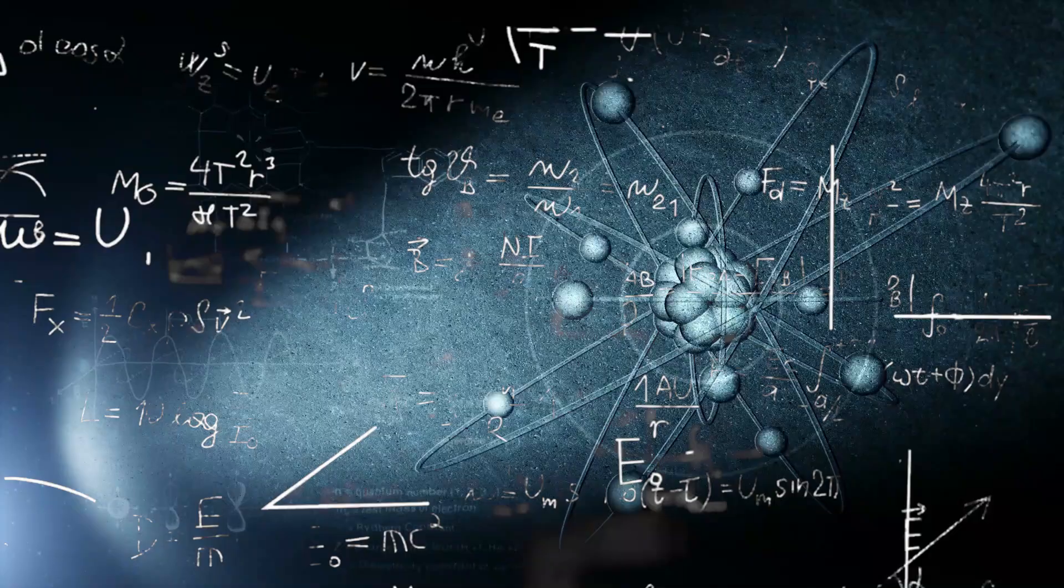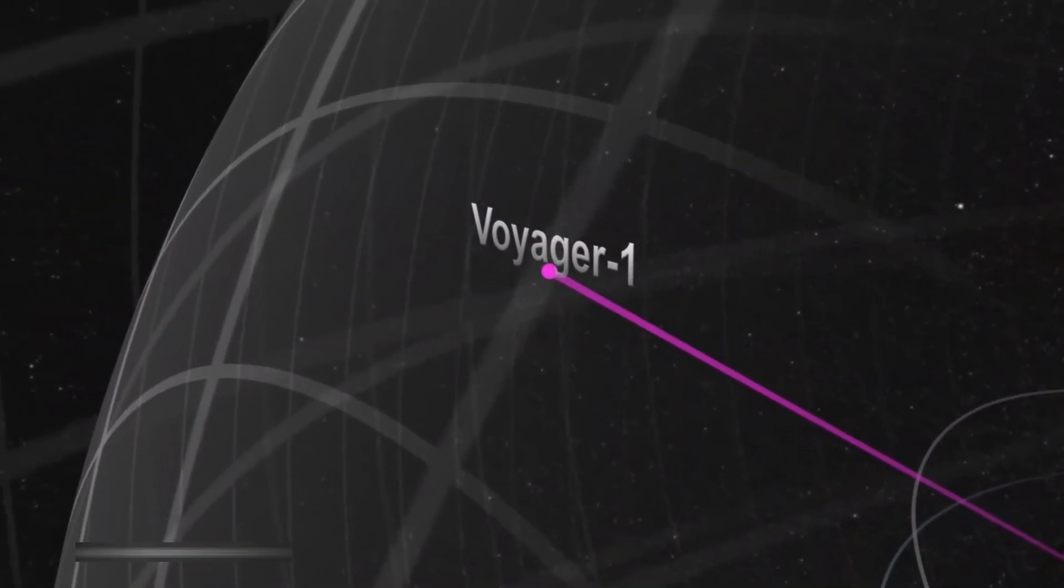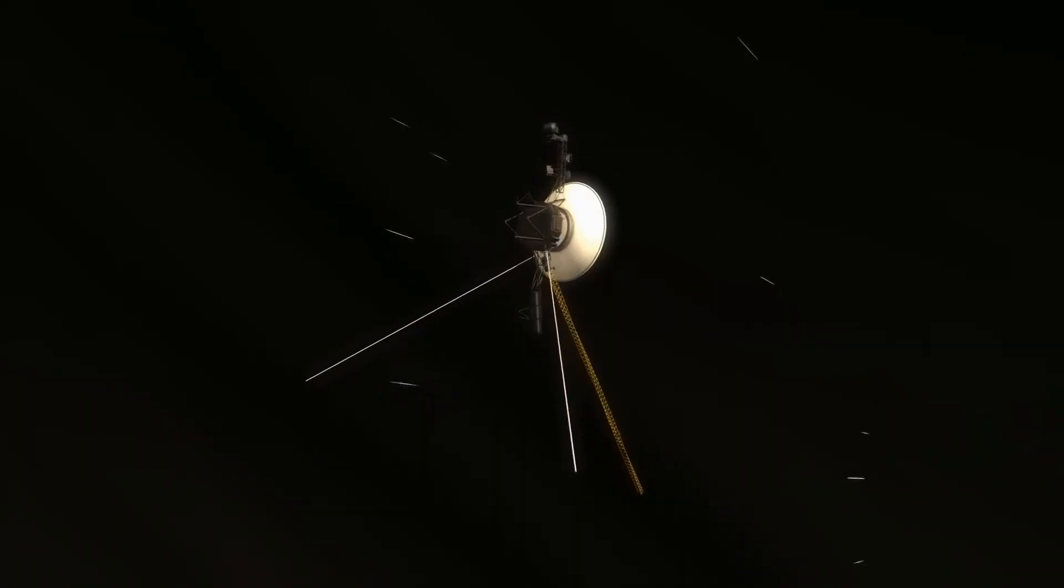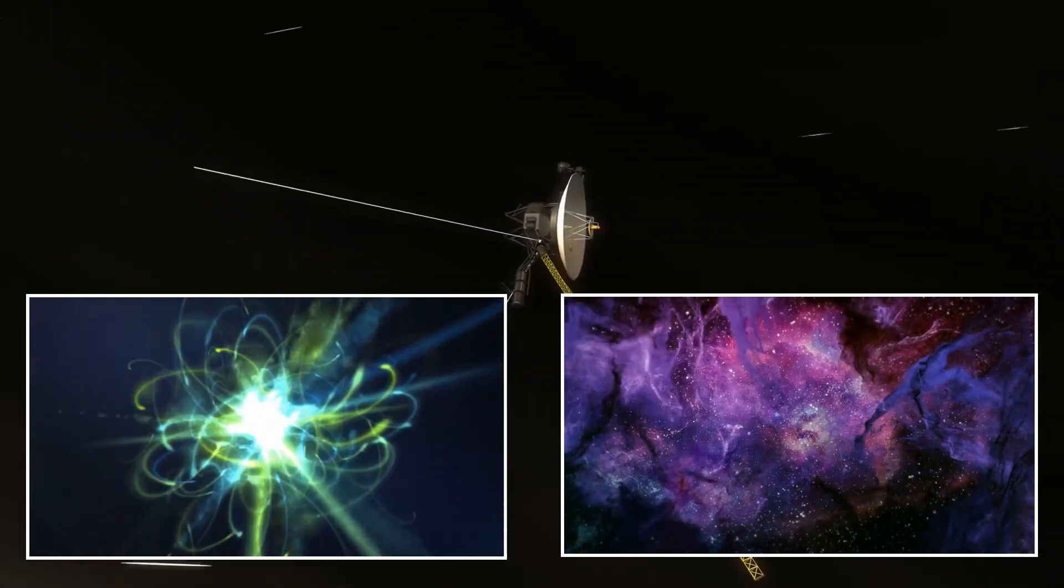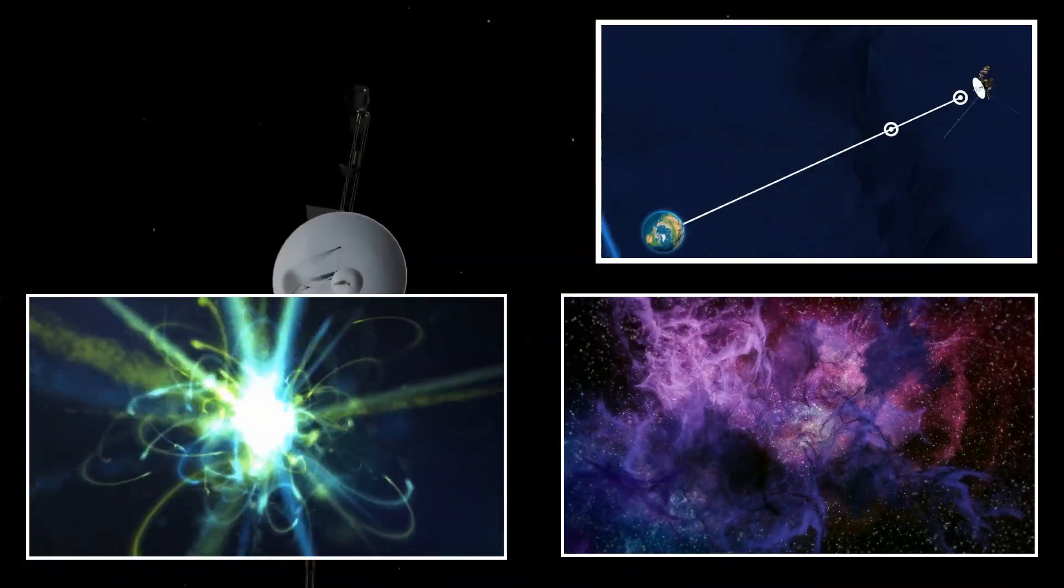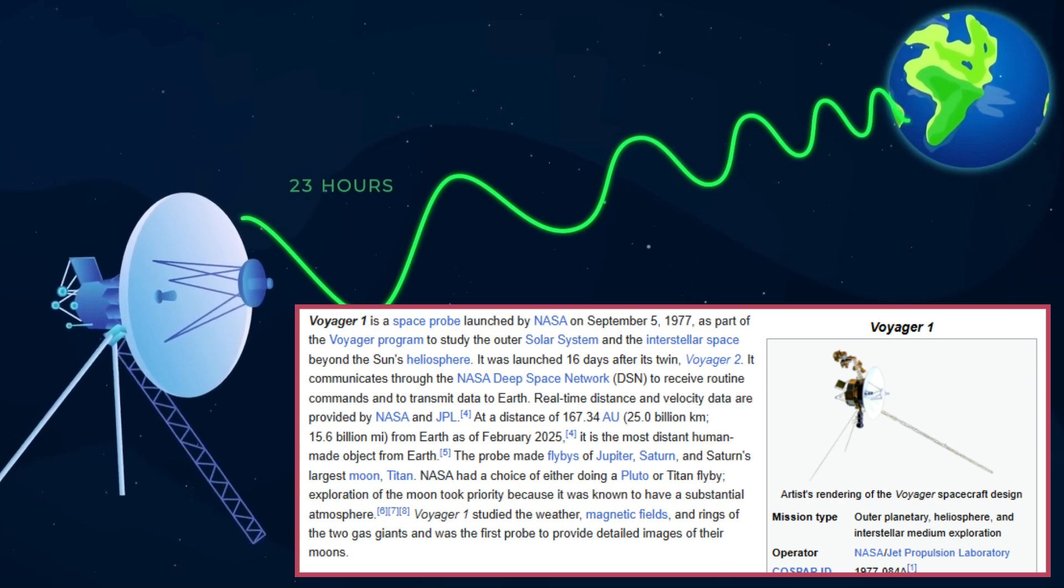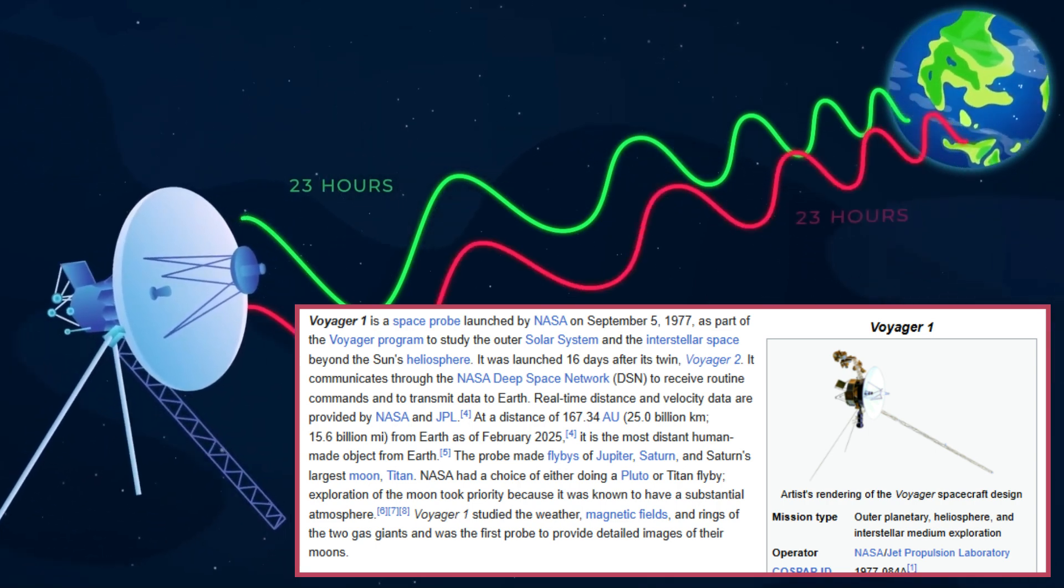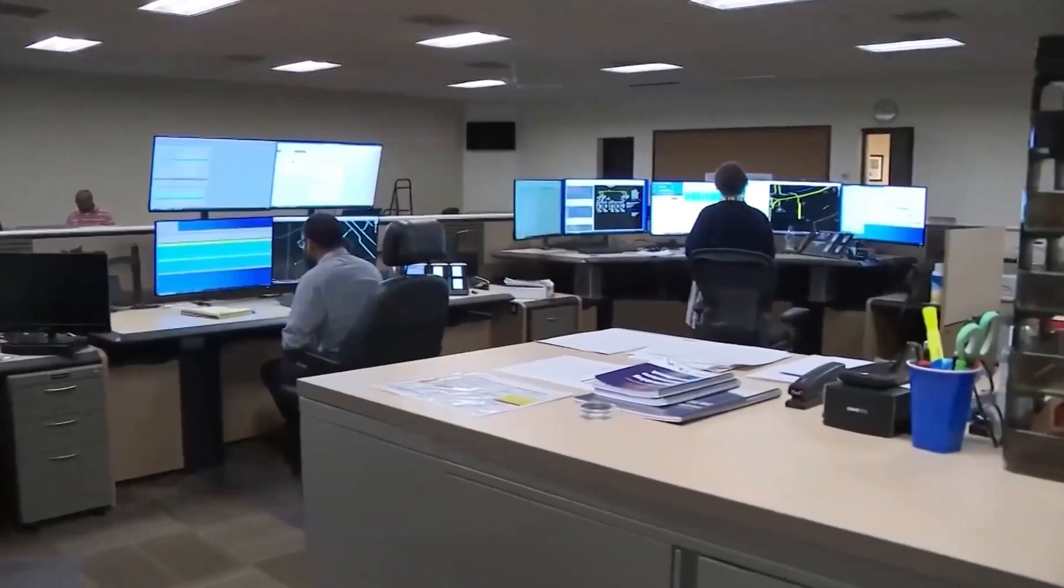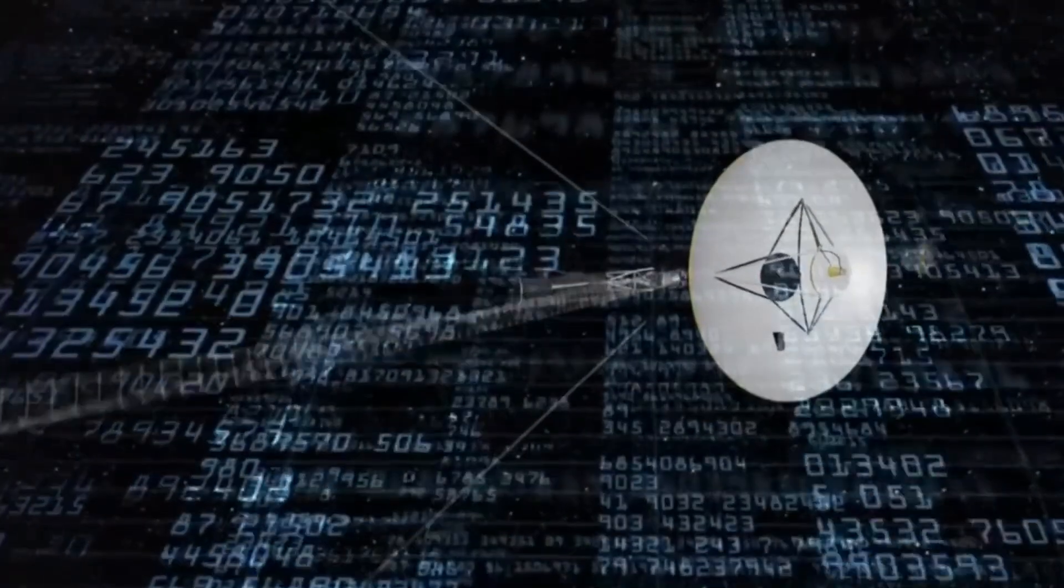Scientists are now debating whether this neutrino pattern is a one-time anomaly caused by unknown space phenomena, a repeating cosmic signal, something we might detect elsewhere in the universe, or an artificial transmission, a possibility no one wants to say out loud but some refuse to ignore. If Voyager 1 detected something real, the implications are staggering. It could be a new force of physics, a deep space event, or even an unknown intelligence. Right now, all we can do is search, analyze, and wait.